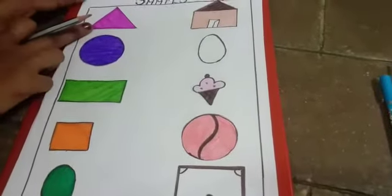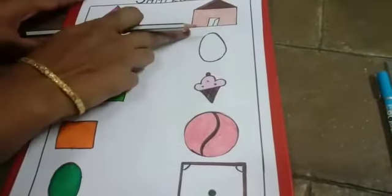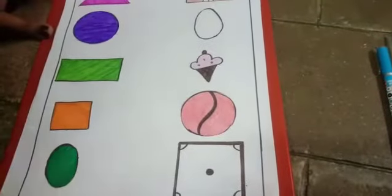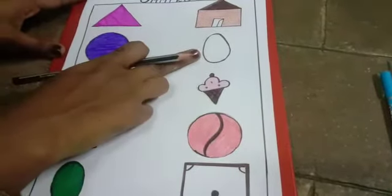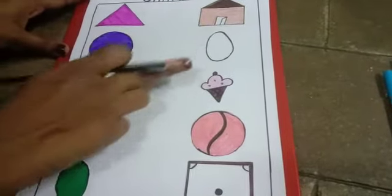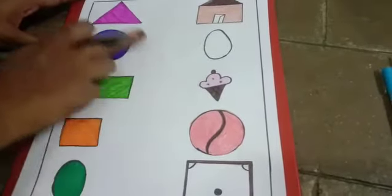This is the triangle. Now you tell me students, which is the figure similar to triangle? Egg? No. Ice cream. Ice cream is similar to the triangle.